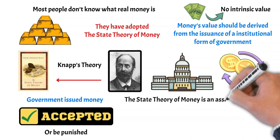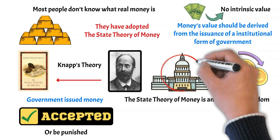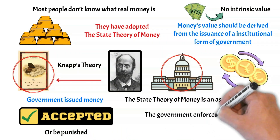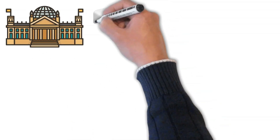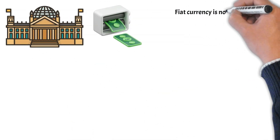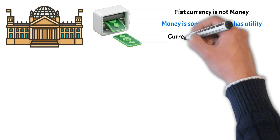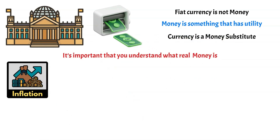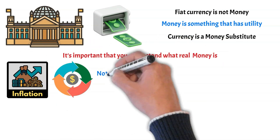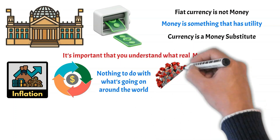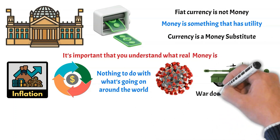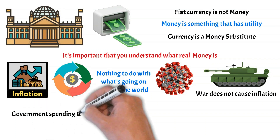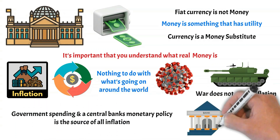Whatever the government issues as money, the people have no choice but to accept it as legal tender, or they will be punished. The state theory of money is an assault on freedom, which is why the government enforces this theory by issuing money in the form of fiat currency. Fiat currency is not money — it is currency. Money is something that has utility, and currency is a money substitute. Government spending and a central bank's monetary policy is the source of all inflation.